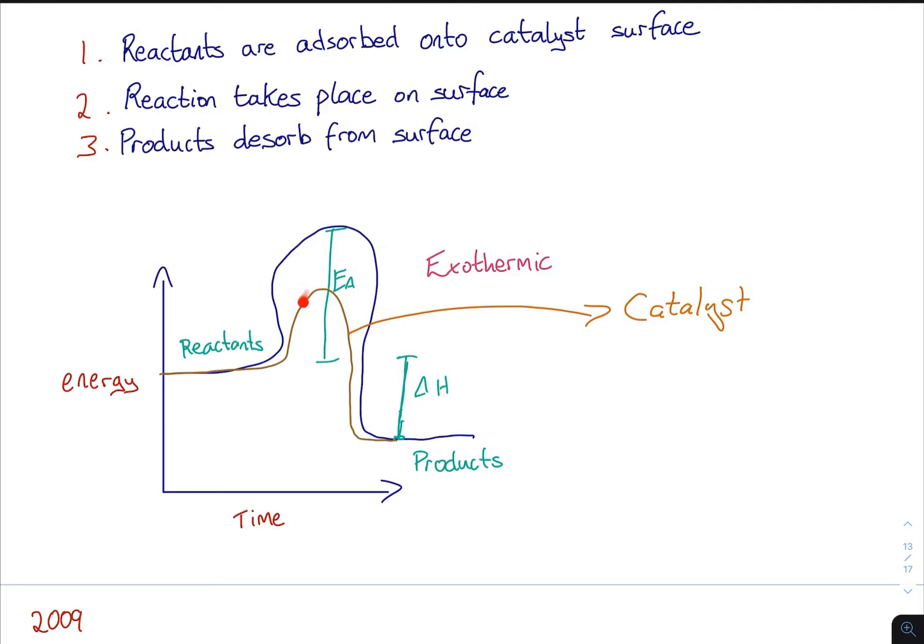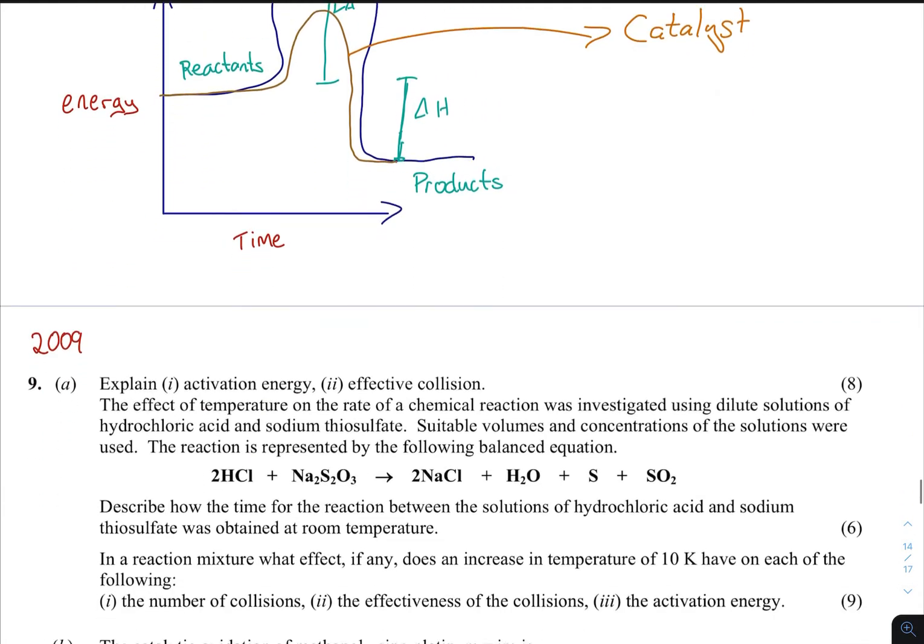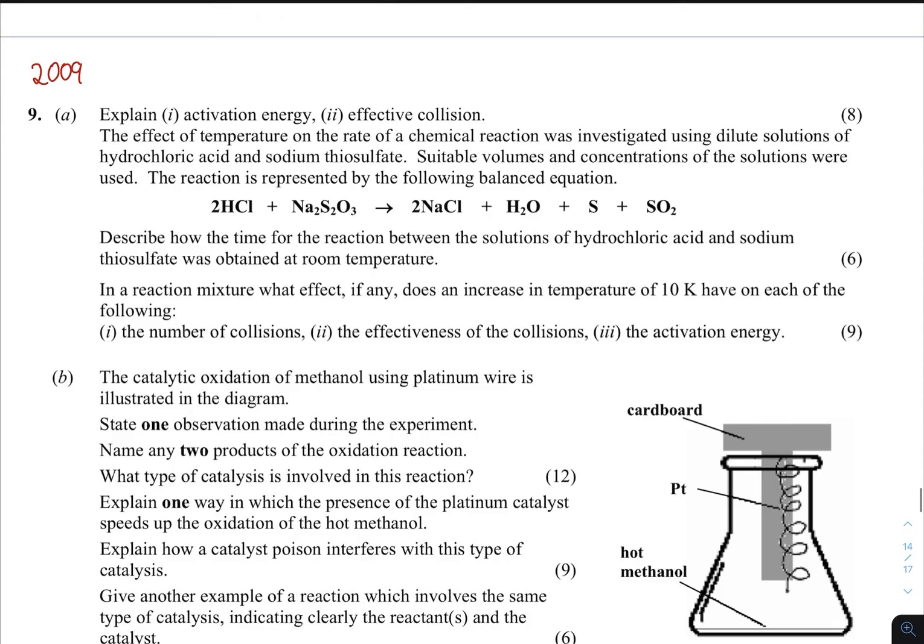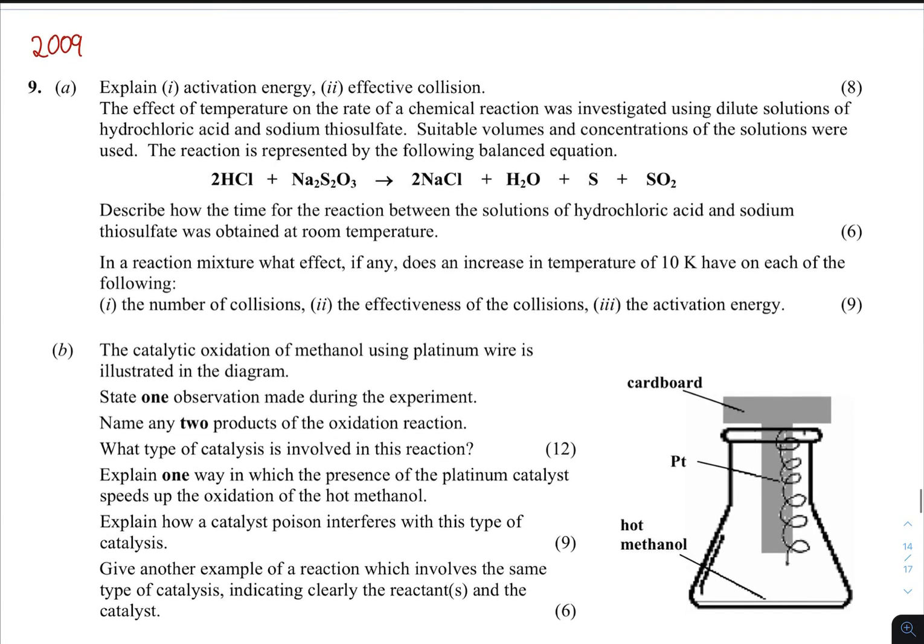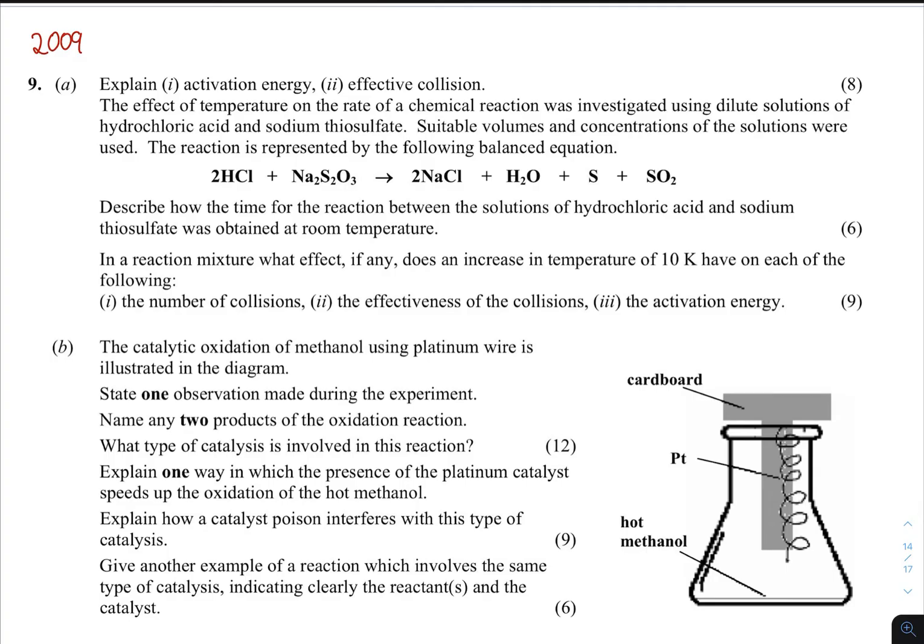Finally, draw a labeled diagram - reaction profile one - but it was slightly different because you had to show one with and without a catalyst. So this is what I have here, the exact same thing again, except this time now you can see I have one here where it has a much smaller EA, and that's with my catalyst. No harm practicing those diagrams.